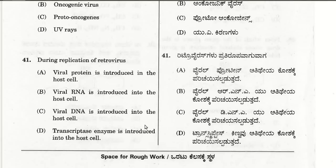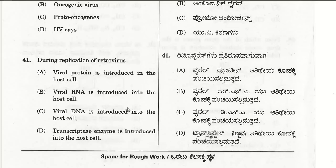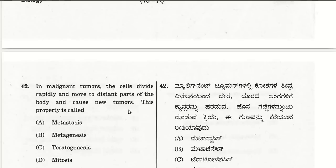The forty-first question: during replication of a retrovirus, viral RNA is introduced into the host cell. That is the second choice and the right answer. Recollecting the diagram: viral RNA enters the host cell, undergoes reverse transcription to form DNA, integrates into the host cell's DNA, and then produces a large number of retroviruses again.